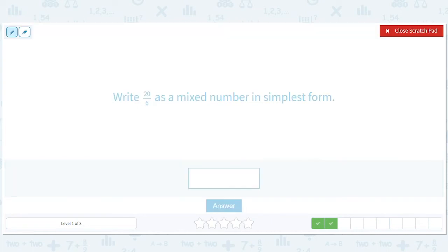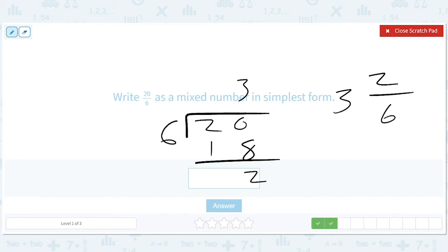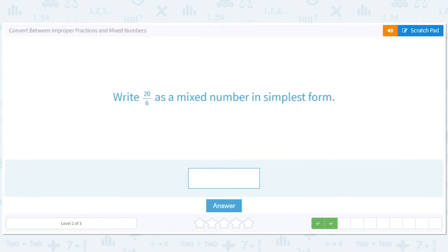20/6. Okay, great. 20 divided by 6 gives me 3. So I have 3 and 2/6. But they said simplest form. So 3 and 1/3. They're always after us.